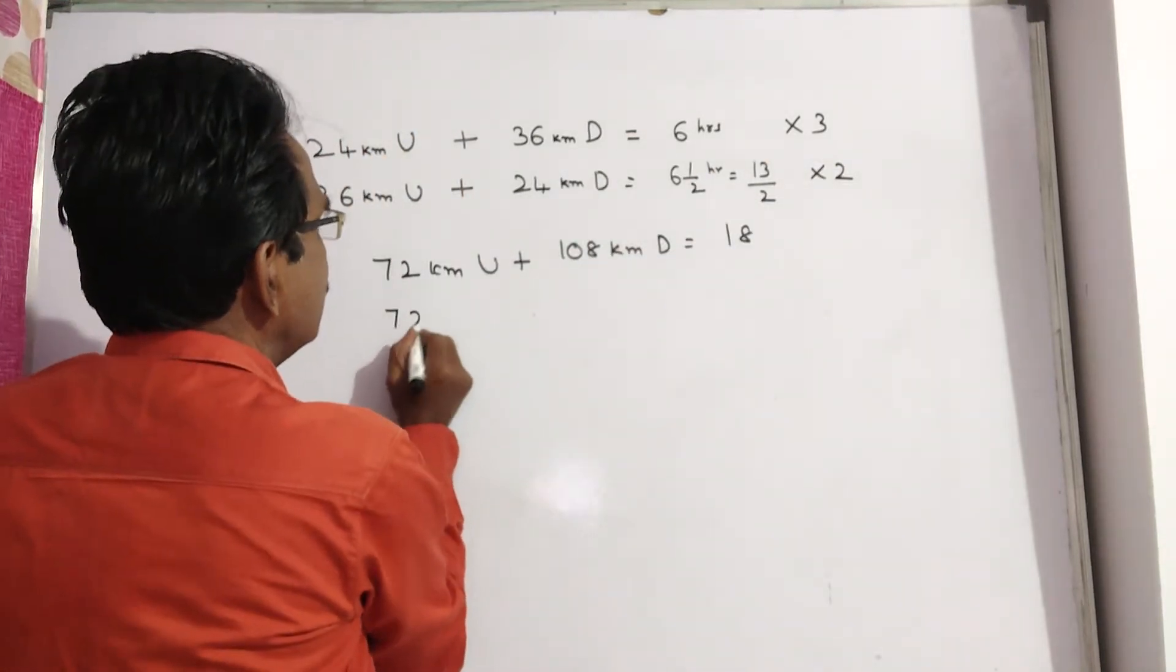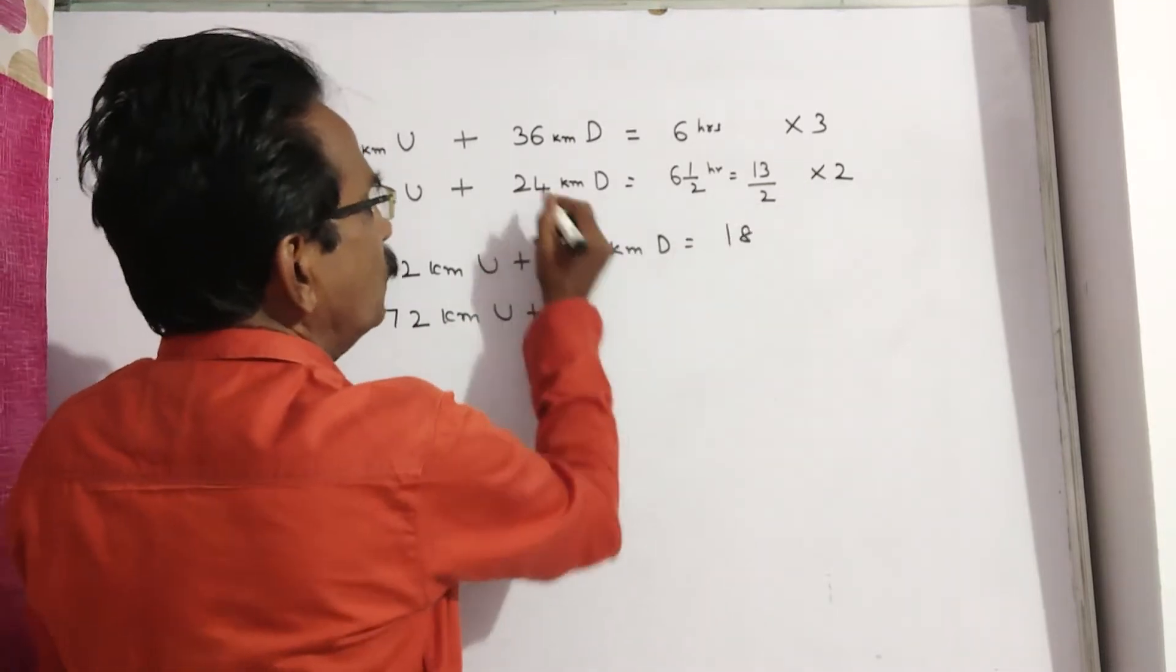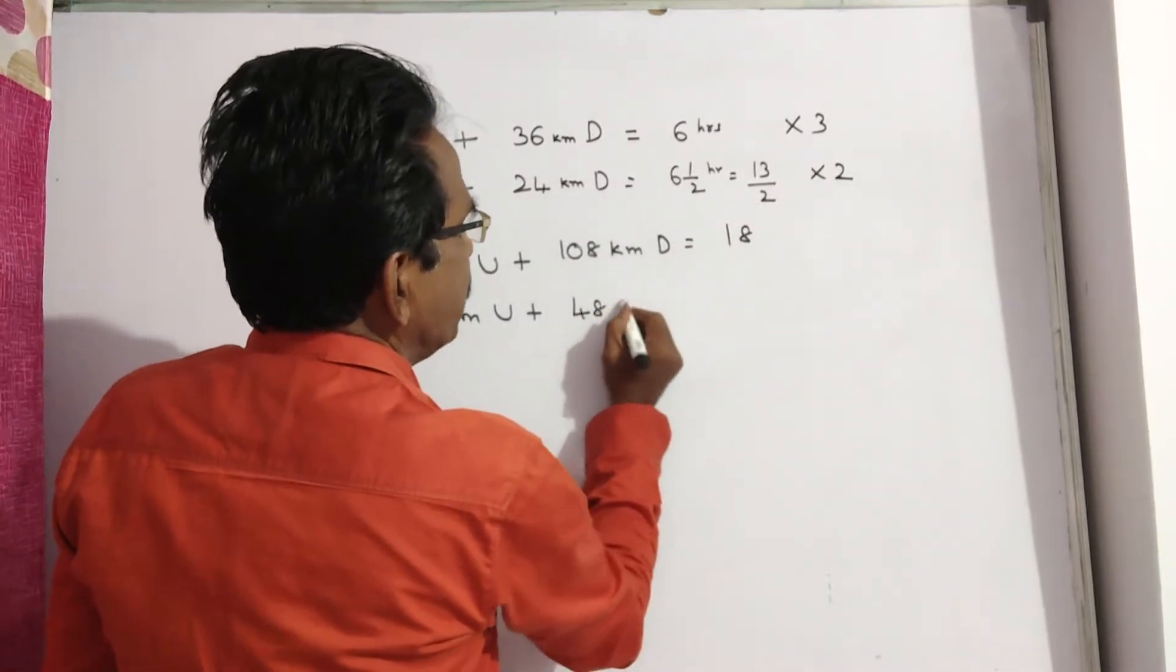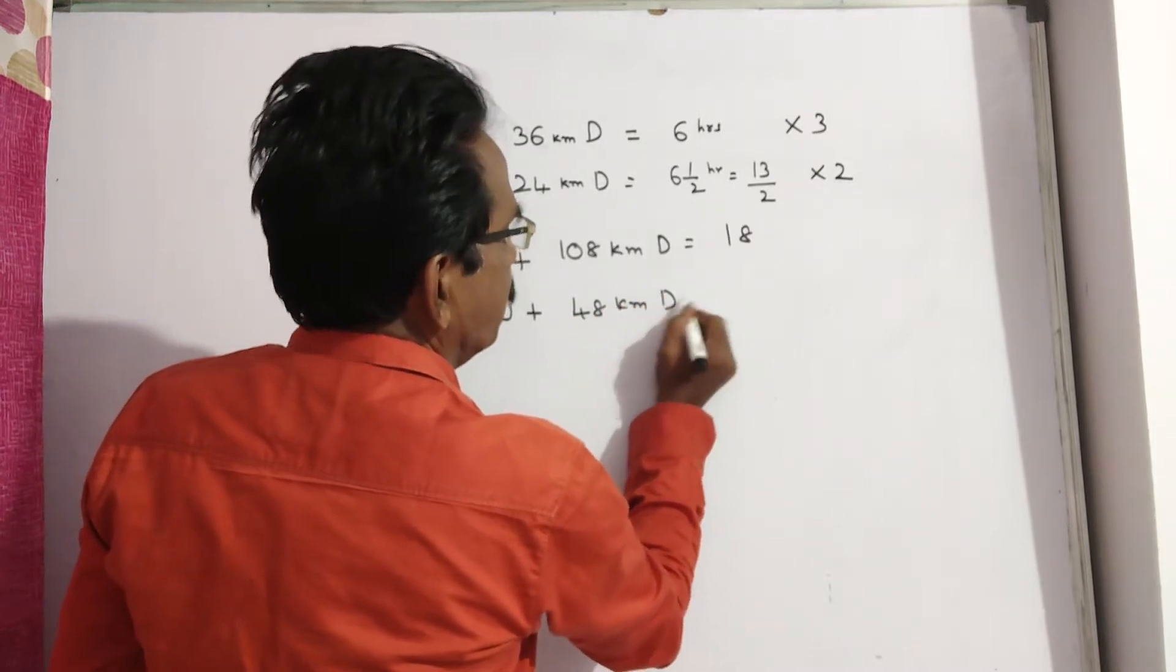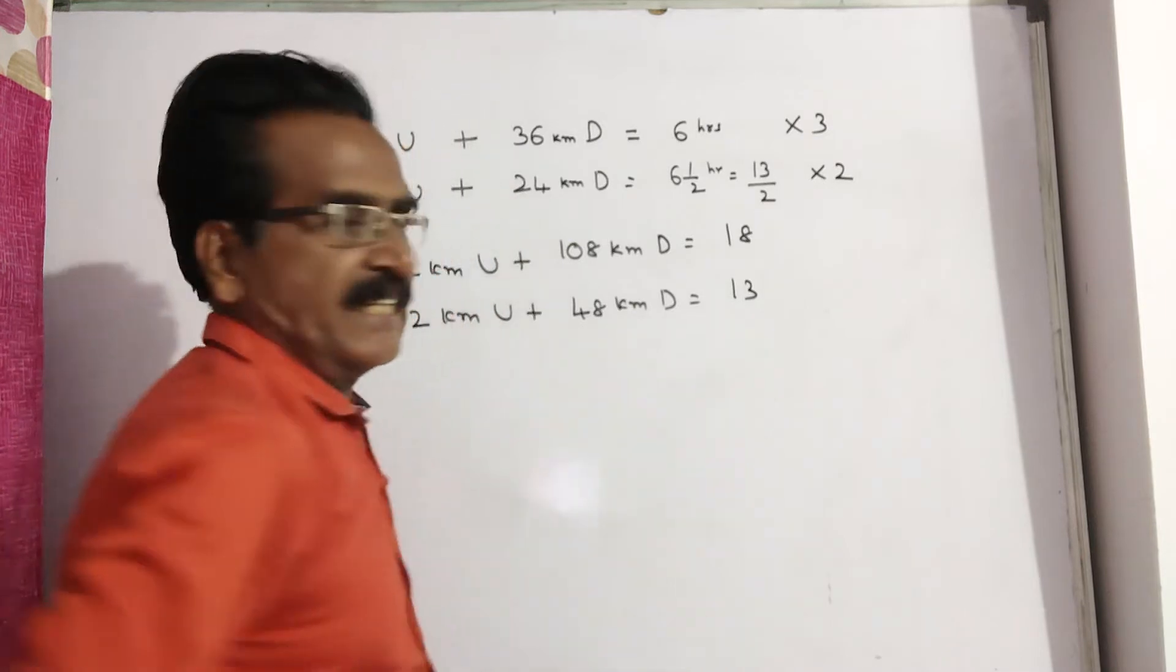In the same way, 2 into 36, 72 kilometers upstream plus 2 times 24, 48 kilometers downstream takes 2 into 13 by 2, 13 hours.